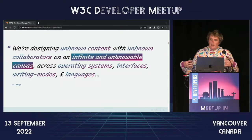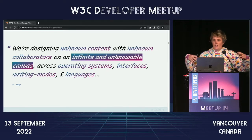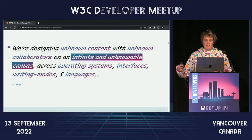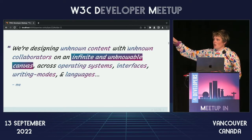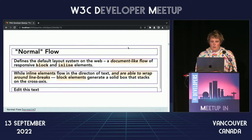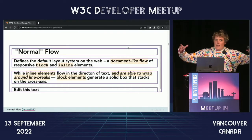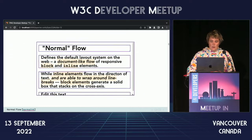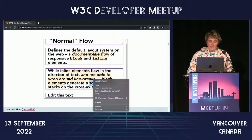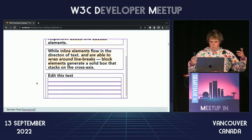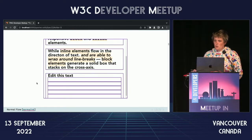We're designing unknown content with unknown collaborators on an infinite and unknowable canvas across operating systems, interfaces, writing modes, and language. This is absurd that we're even trying to do this, and amazing that we've pulled it off to some extent. A lot of that is thanks to normal flow, which predates CSS entirely and allows us to have content that reflows to a container and containers that grow based on the content.